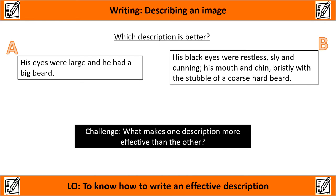To demonstrate this point further, have a look at these two descriptions A and B. Which description do you think is better? As a challenge, what makes one description more effective than the other? Yes, one's longer than the other — that doesn't always necessarily mean it's a better description, but in this case I would suggest that B is the stronger description. What does A tell me about the character? Just a few details, but from those details — large eyes and the big beard — I can't really see what it is the author wants me to see. I could be picturing an evil, malevolent character, or quite similarly you could be picturing Santa Claus. The description's not effective.